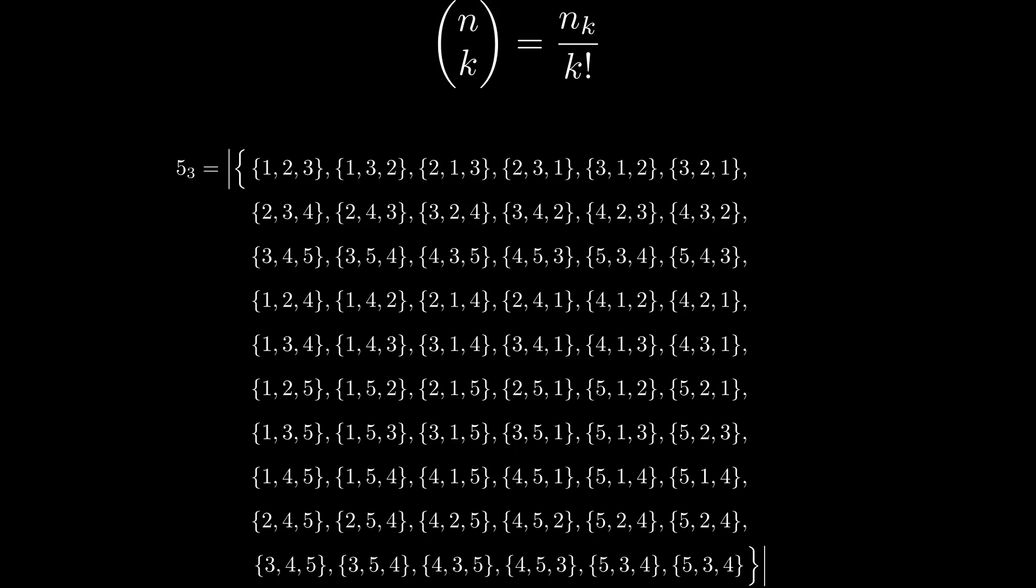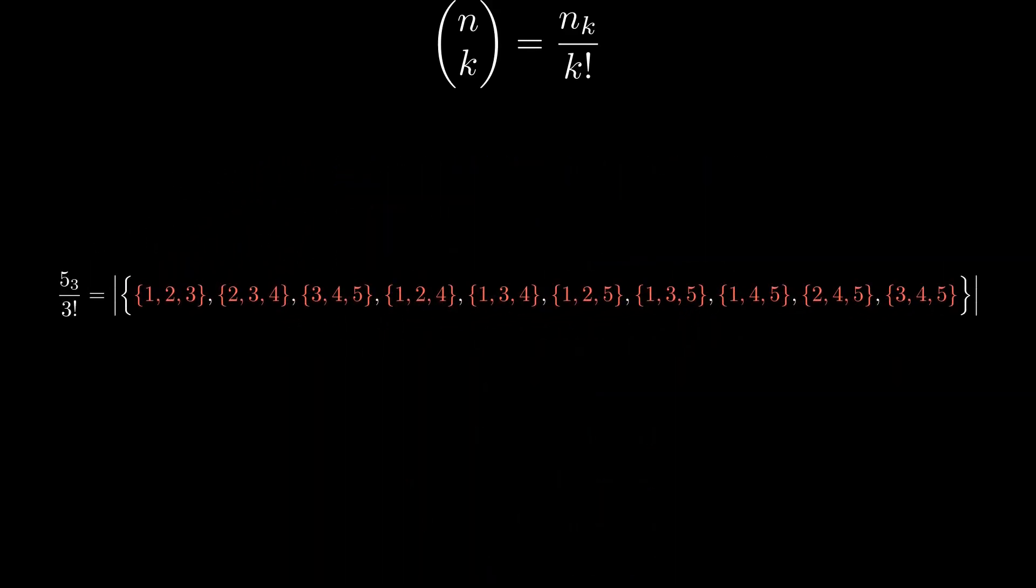While the denominator, k factorial, counts the total number of possible permutations of k objects. The quotient, then, is the number of ways you can choose k objects out of n, ignoring the order. That is, n choose k.